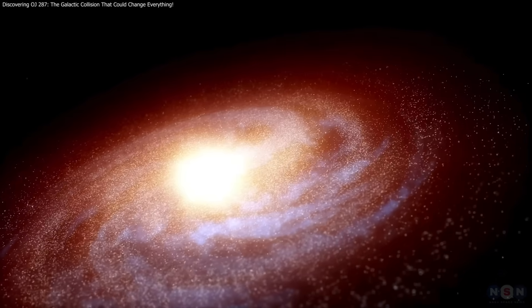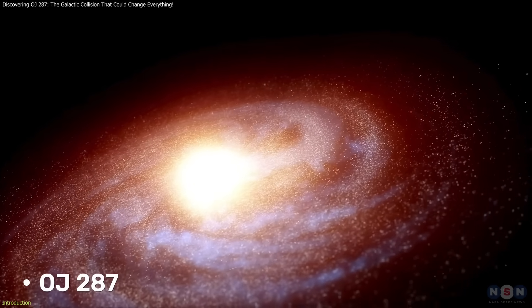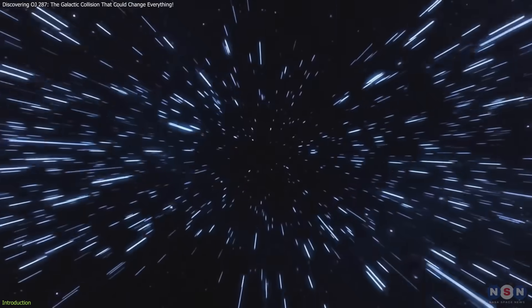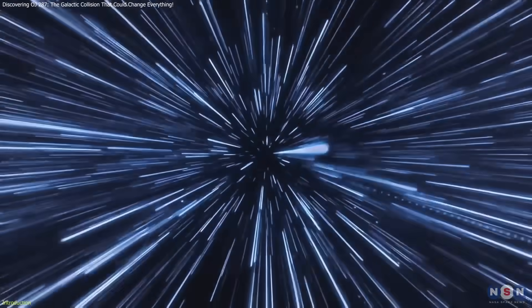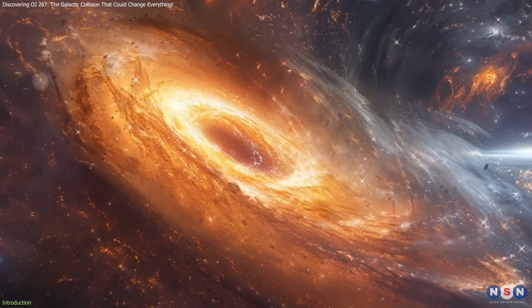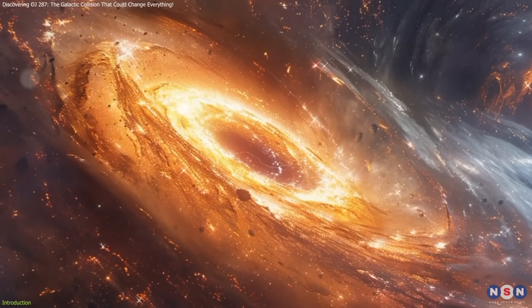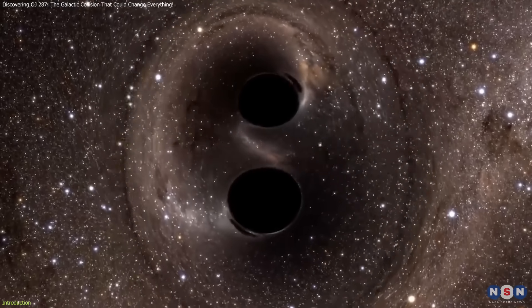Astronomers have made a groundbreaking discovery in the distant galaxy OJ 287, located 4 billion light-years away from Earth. This galaxy harbors one of the most extreme black hole systems ever observed, a binary supermassive black hole.